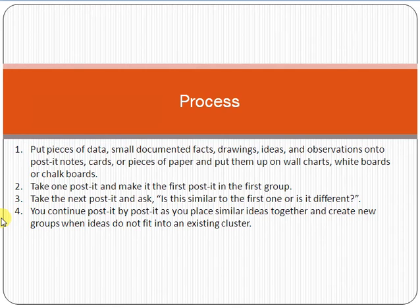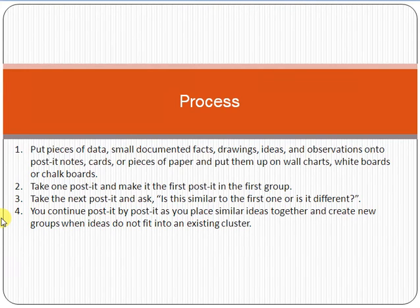The step-by-step process: first, put a piece of data — a fact, drawing, idea, or observation — onto a sticky note or card. Place it on the wall and discuss it. Then take another idea from another person and place it on the wall. Keep discussing ideas this way. After all ideas are discussed, group them together, and then prioritize — determine which group has higher priority over others. Once grouping and priority are finalized, take decisions accordingly.